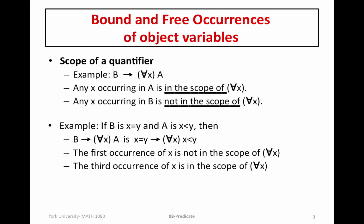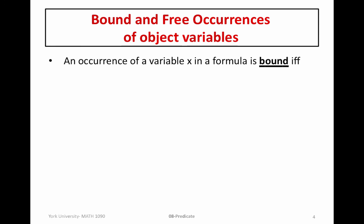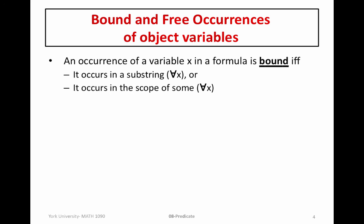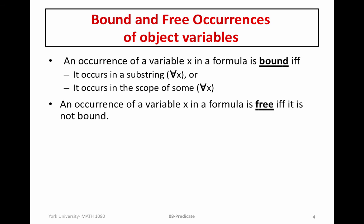Now that we have this definition, we can identify what a bound occurrence means and what a free occurrence means. An occurrence of a variable x in a formula is bound if and only if it occurs in the substring 'for all x' — so x occurs within this quantifier — or it is in the scope of some quantifier over x. We define a variable x to be free if and only if it is not bound, meaning it's not a variable within the quantifier and not within the well-formed formula in which the quantifier acts.